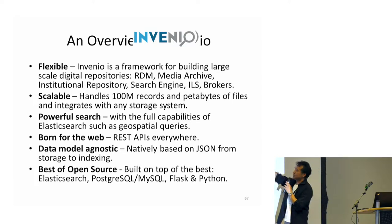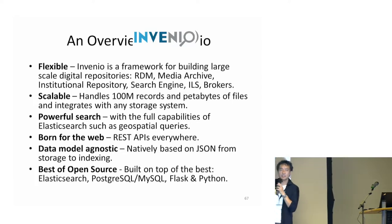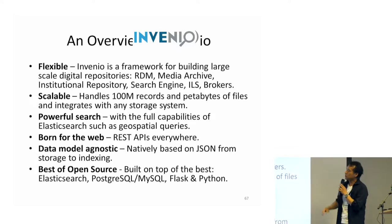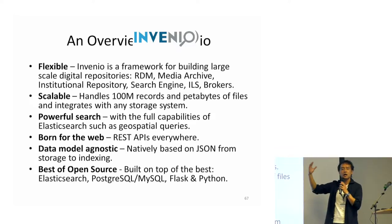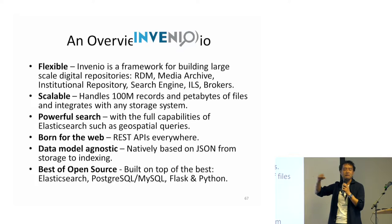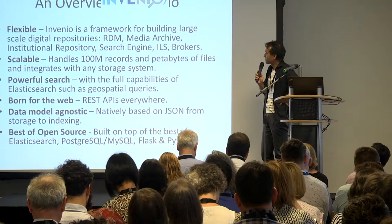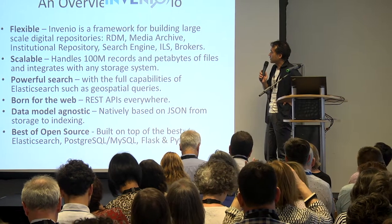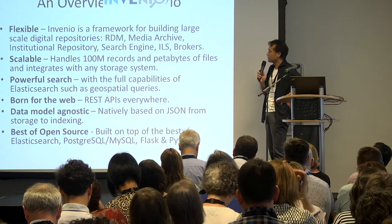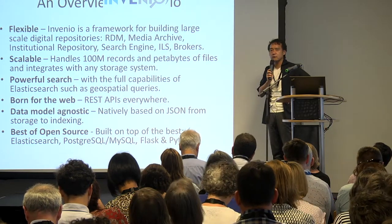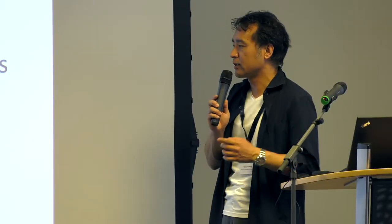Invenio is a very flexible and scalable repository platform, and on top of that you can develop different types of repositories. The architecture is very similar to Fedora, and similarly to how Samvera or Islandora sits on top of Fedora, Invenio has powerful search using Elasticsearch capabilities. It's born of the web, so there's API everywhere — a very modern idea.